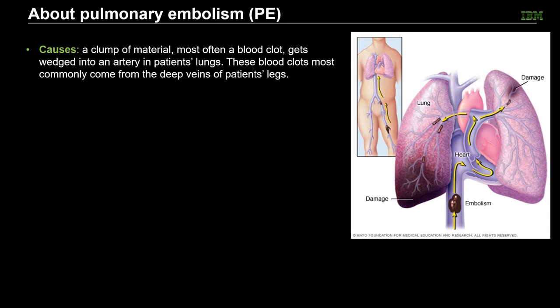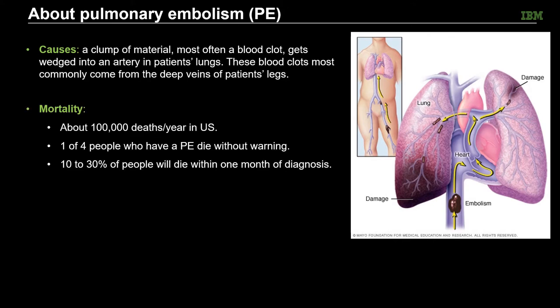Pulmonary embolism, also called PE, is a sudden blockage in the pulmonary vasculature by a clot of material, most often a blood clot that is usually formed in the deep vein of a patient's legs and travels in the bloodstream up to the lungs. PE is a life-threatening disorder associated with high mortality, with an estimated 100,000 deaths per year in the US. One out of four people who have PE die without warning, and up to 30% of people die within the first month of diagnosis.